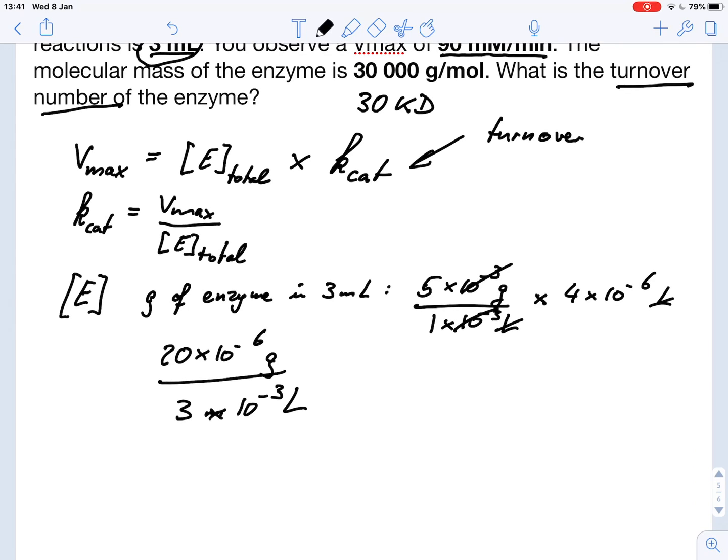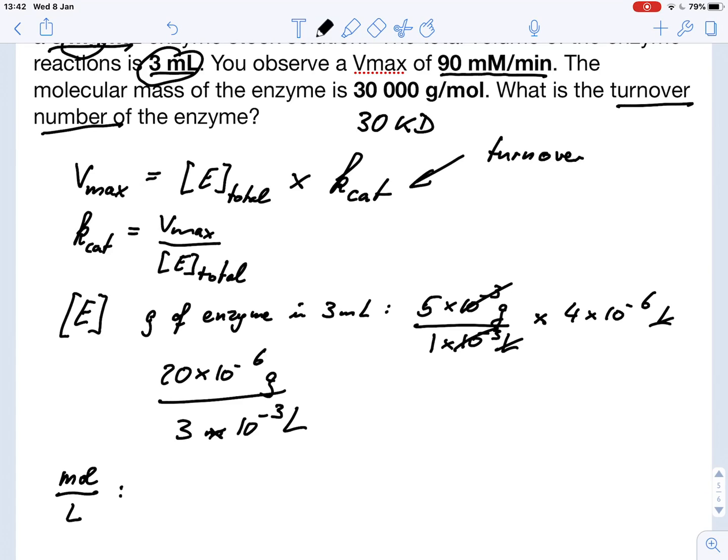Now we need to convert this grams per liter into moles per liter for the enzyme concentration, and that's quite easy to do. So we have 20 times 10 to the minus 6 grams in 3 times 10 to the minus 3 liters. We need to replace the grams with moles, and here the easiest way is we divide by the molecular mass.